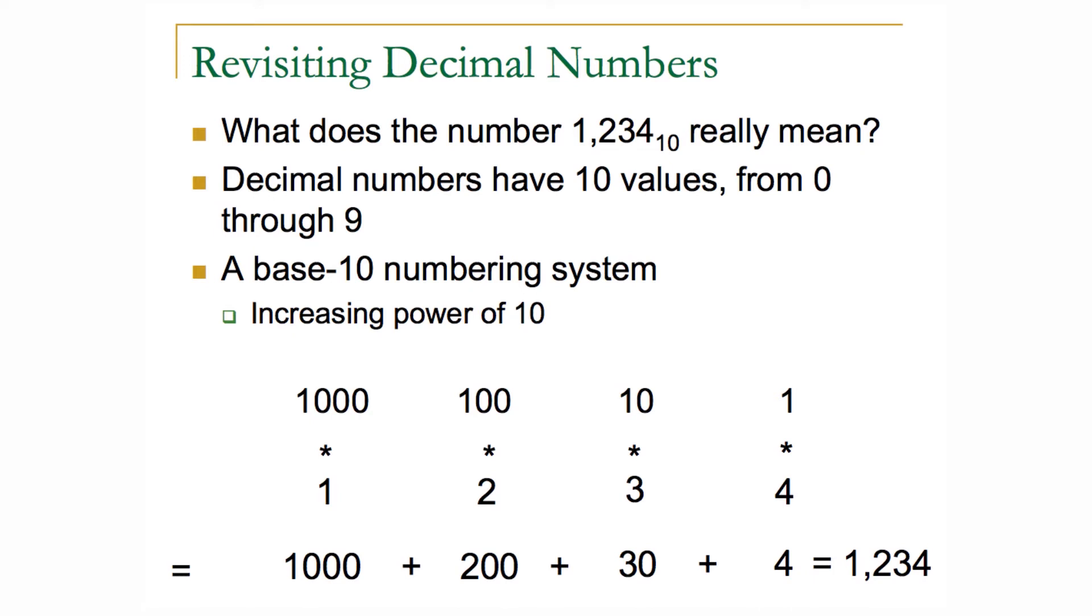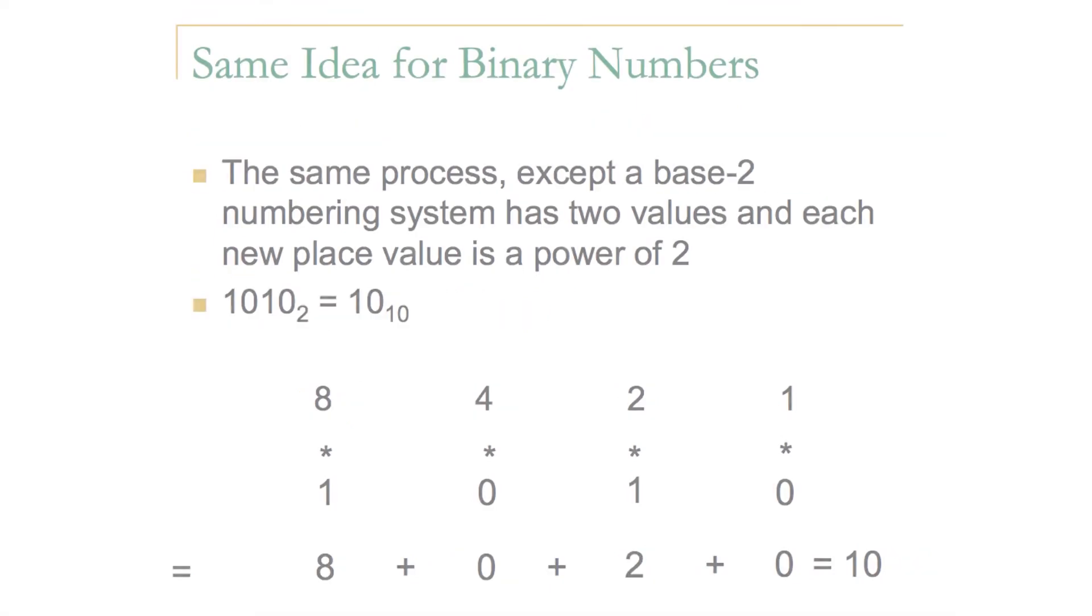This is a base-10 numbering system for decimal numbers with values zero through nine. In a binary number system, we have two values, zero and one, but we can use this exact same process to represent numbers.